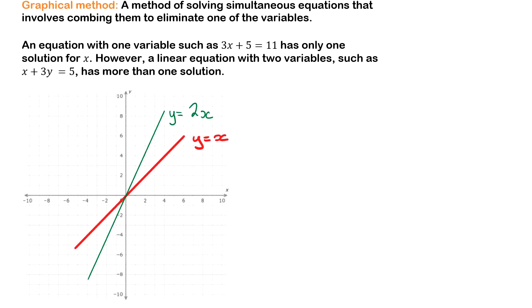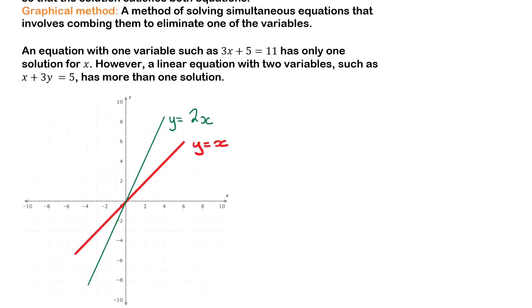An equation with one variable such as 3x plus 5 equals 11 has one solution for x. However, a linear equation with two variables such as x plus 3y equals 5 has more than one solution.